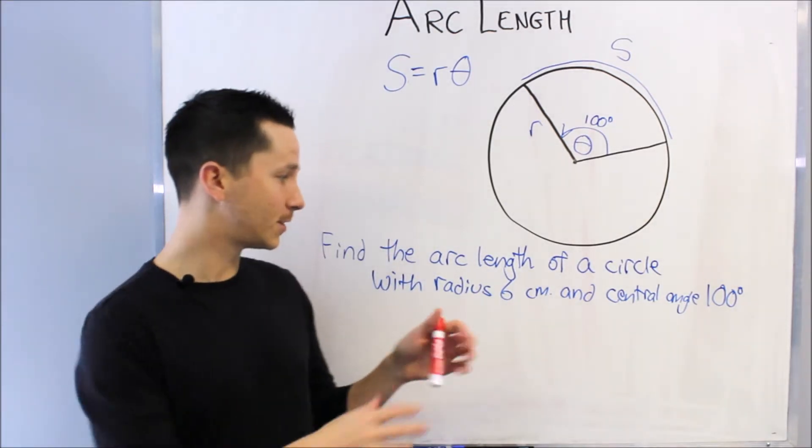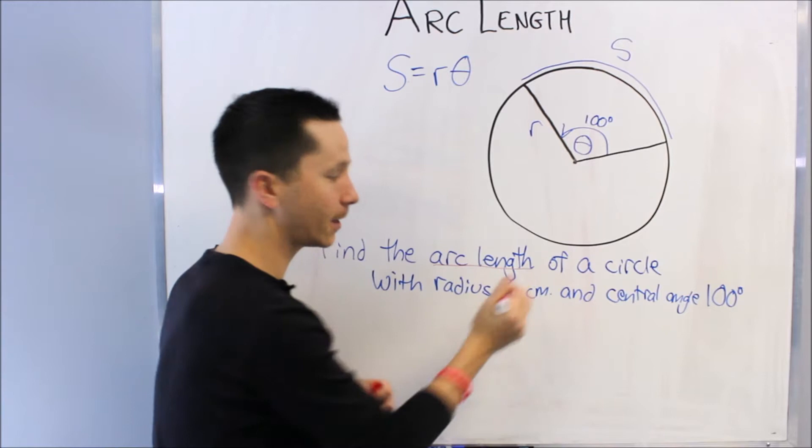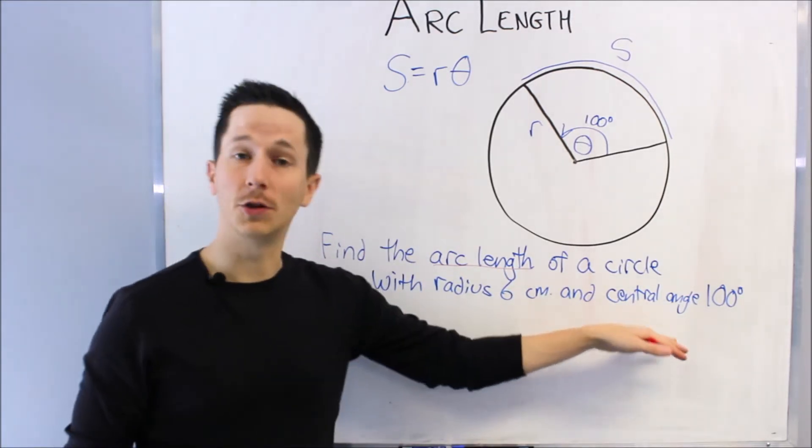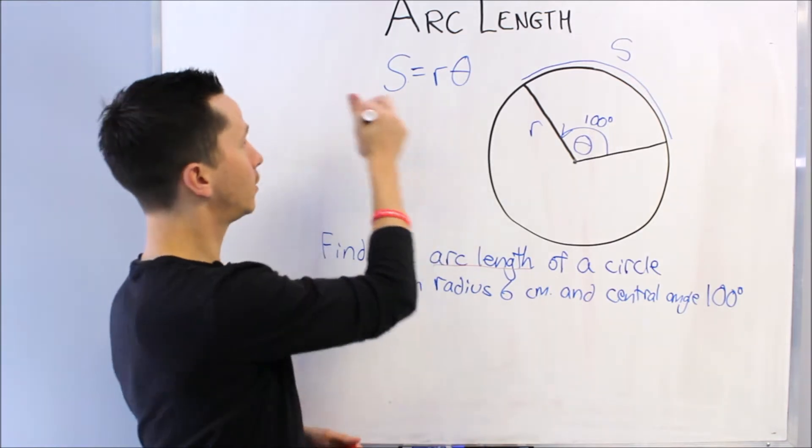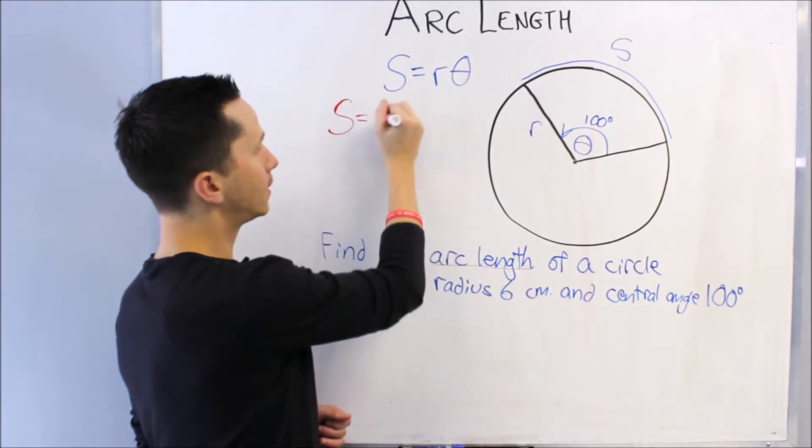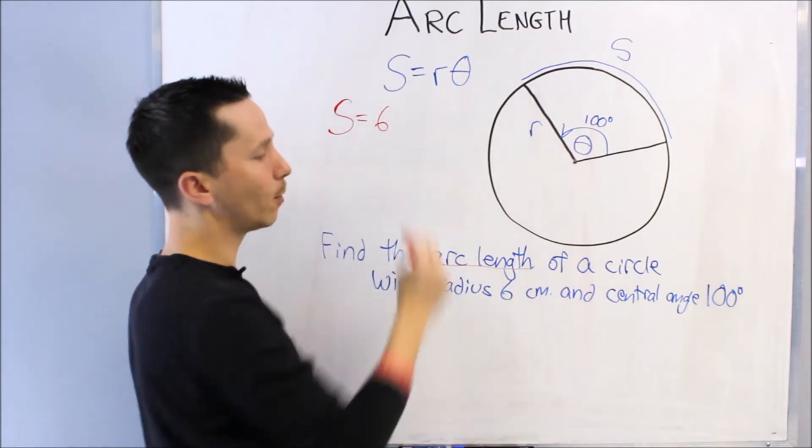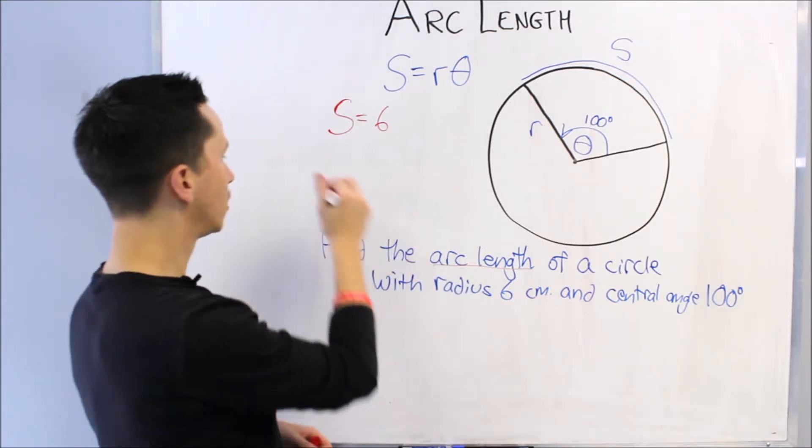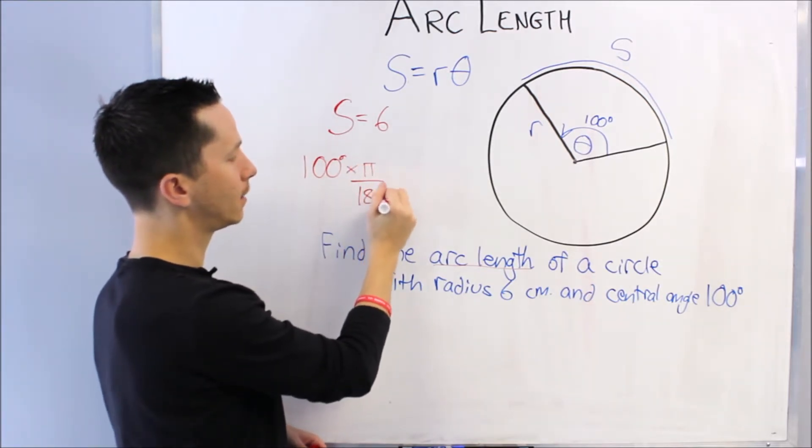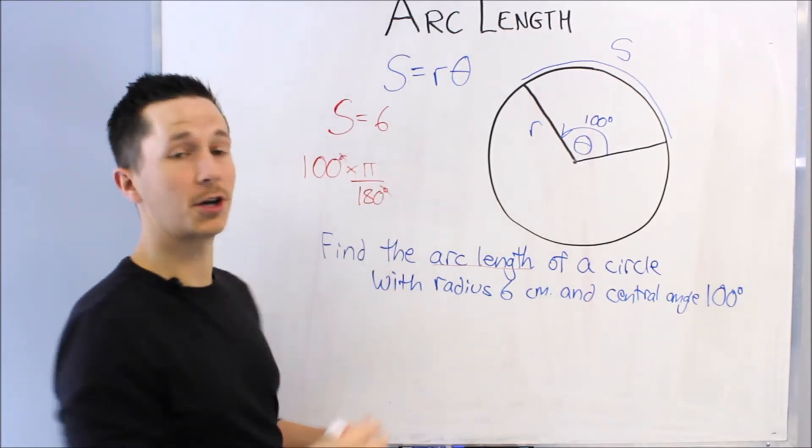We go right away, as soon as we see the words arc length in a question, to our formula s equals r theta. I'm looking for arc length, so I don't need to adjust at all. So we know it's going to be s equals the radius is 6 times theta, but we can't use 100 degrees. So first we have to convert: 100 degrees times π over 180, because we know we want to convert to radians. This is equal to 10π over 18, I just cancelled the zero.